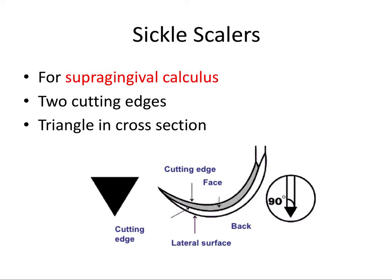Let's talk about the instruments used in scaling and root planing. The sickle scaler is primarily and only used for removal of supragingival calculus. Looking at a zoomed-in version of the working end, you'll notice the sickle scaler has a very sharp tip and a triangular cross section. We have the face of the instrument on top and a lateral surface on each side, forming two cutting edges — one on each side — which you can use against the tooth surface to remove and scrape off calculus.